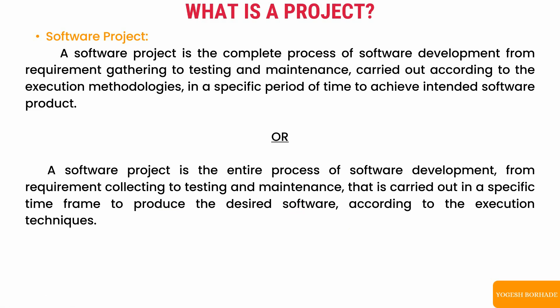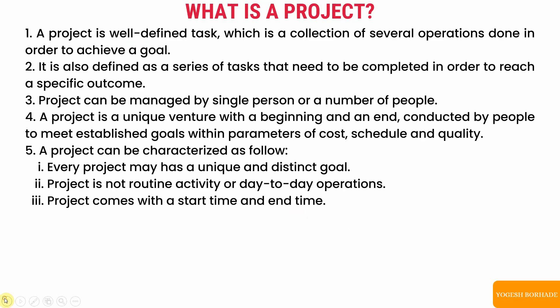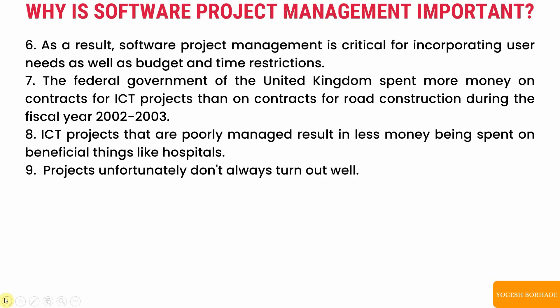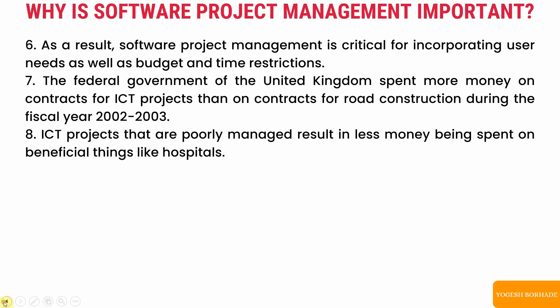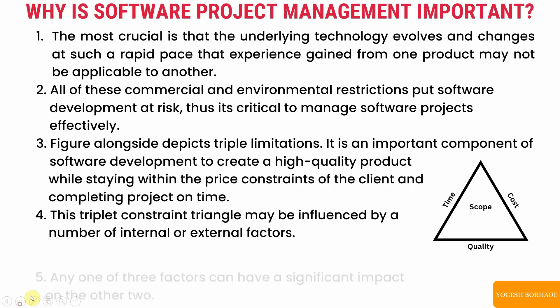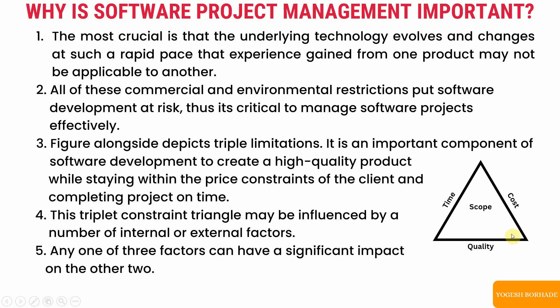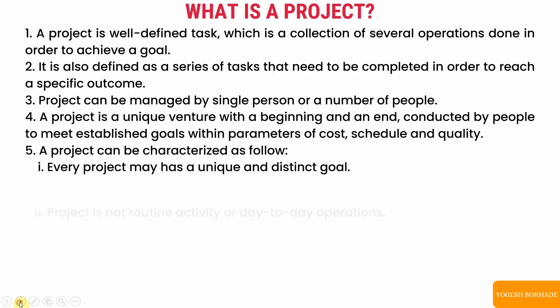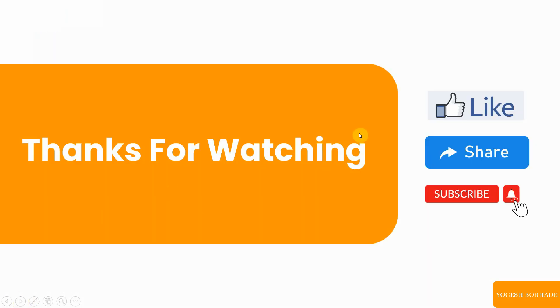In this video we covered the first two topics: why software project management is important — including the triple constraint diagram of quality, cost, and time — and what is a project and what is a software project. If you understood the concepts, please like the video, share it with your friends, and subscribe to the channel for more upcoming videos. Thanks for watching.